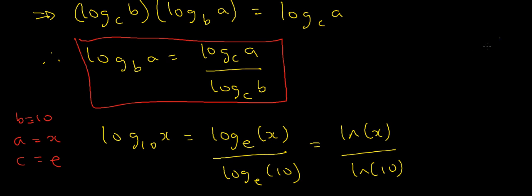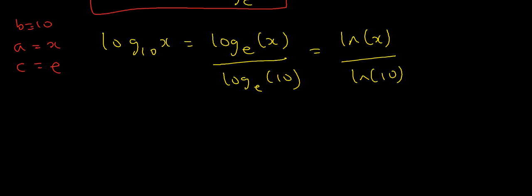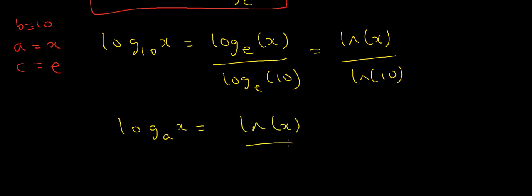By the way, if you have another base — say log base a of x — then you just write that as the natural log of x divided by the natural log of a. So you write natural log of x and divide by the natural log of whatever the base is. For example, log base 7 of x would be ln(x) divided by ln(7).